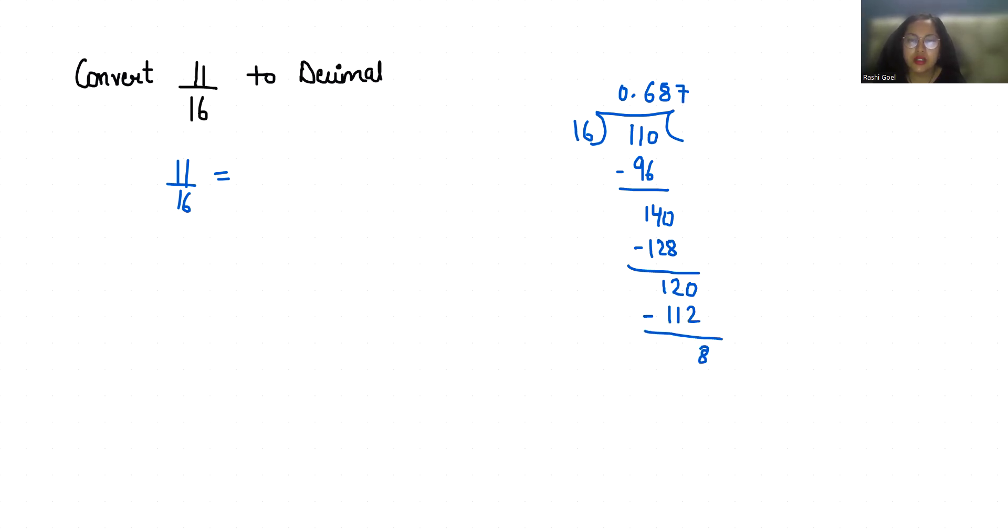This gives us 8. So that's 0. 16 times 5 is 80.